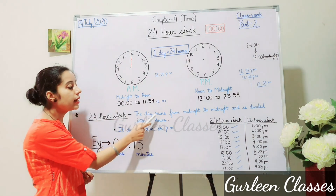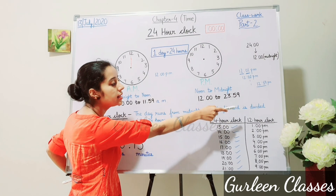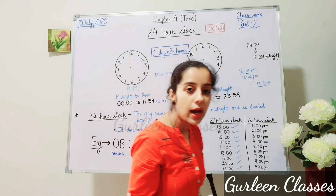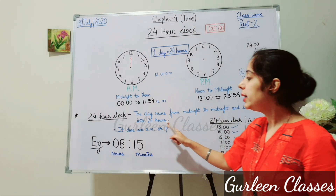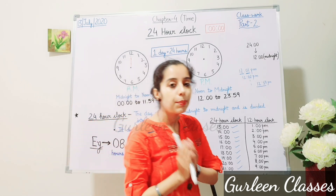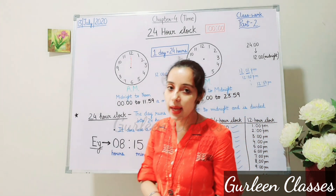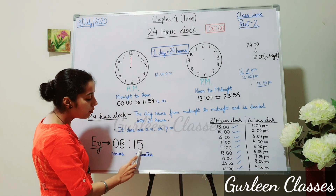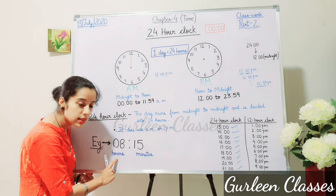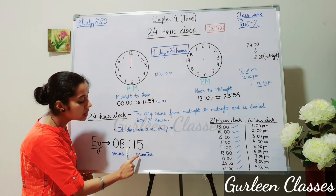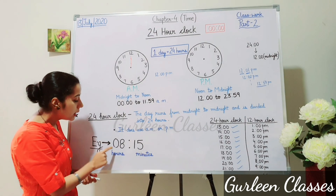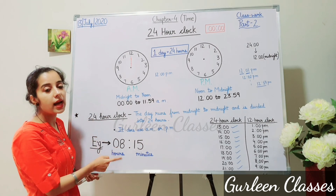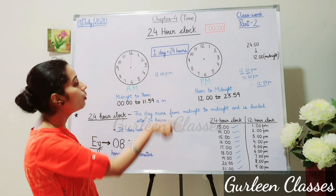In the 24-hour clock, the day runs from midnight to midnight and is divided into 24 hours. In 24-hour clock, we do not use AM and PM. For example, 08:15 — here 08 shows hours, then we write a colon, then 15 shows minutes. We always write 4 digits. For numbers less than 10, like 8, we add a zero in front, and this zero is known as a leading zero. I hope students this 24-hour clock is clear.